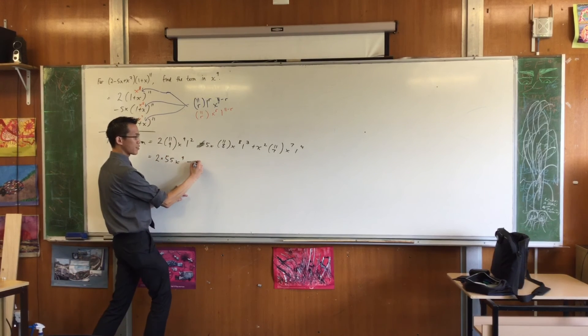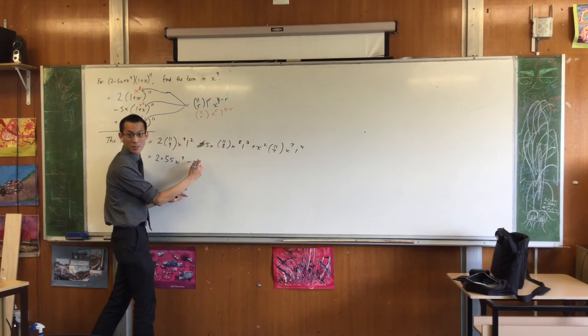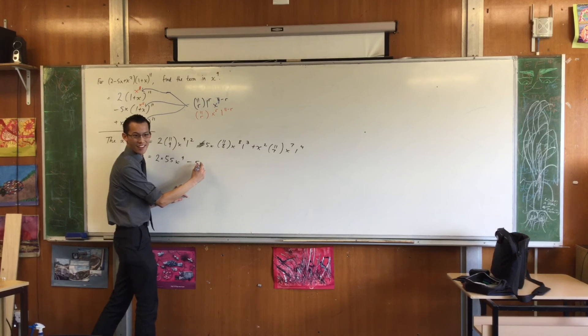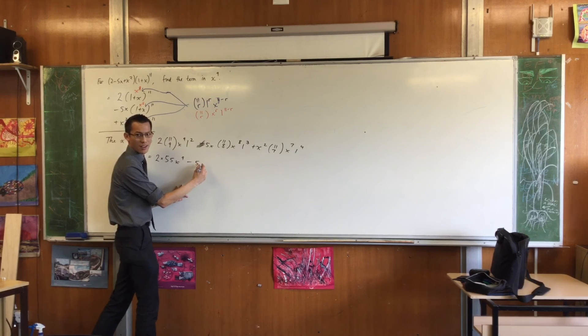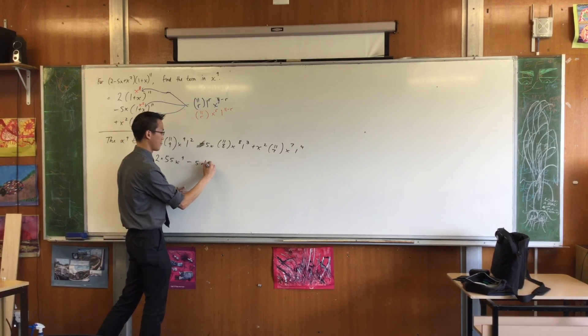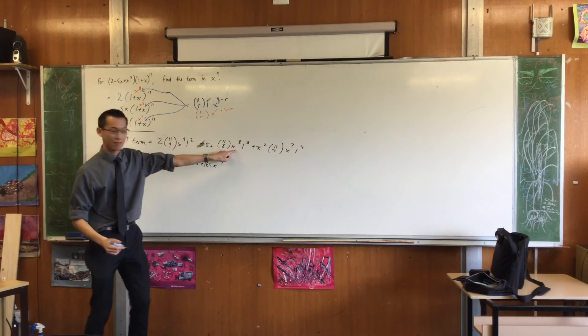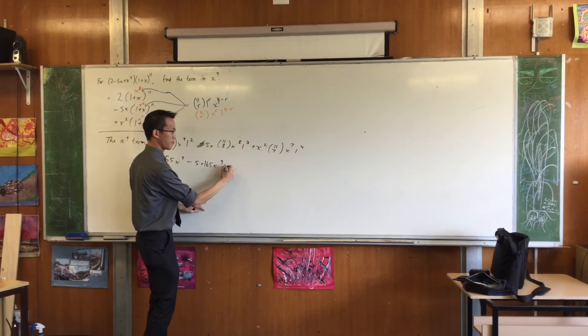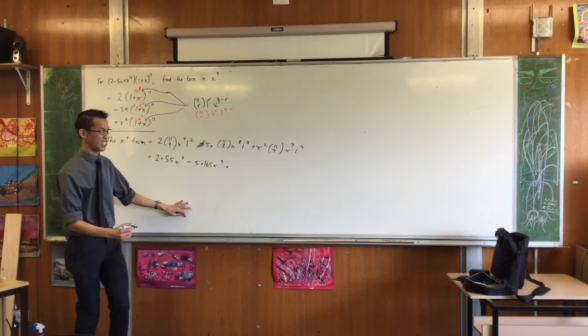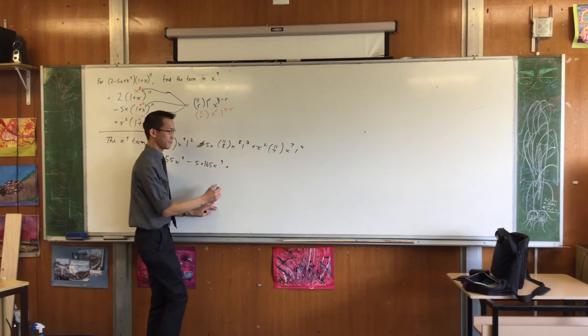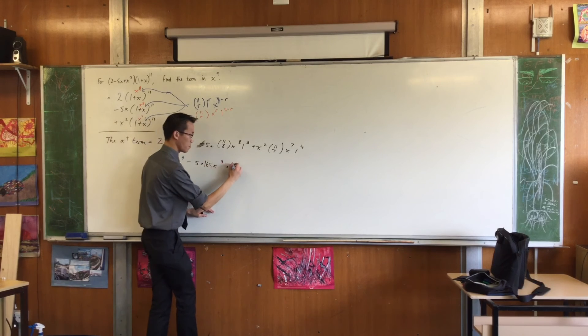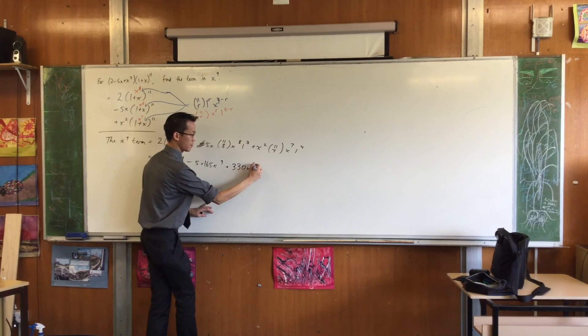In here, I'm going to get minus 5 times... 165. 165. And again, there's x to the 9. You can see that, right? And then last one, plus 11, c, 7. 330. Thank you. x to the 9. Okay.